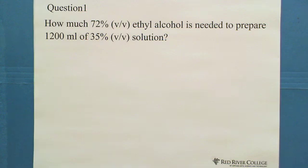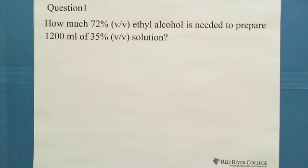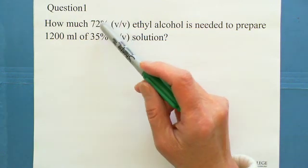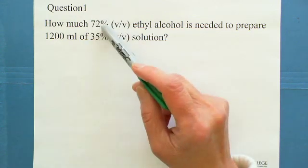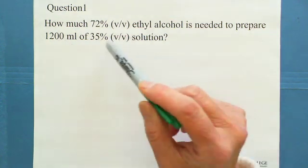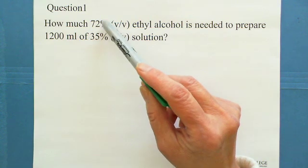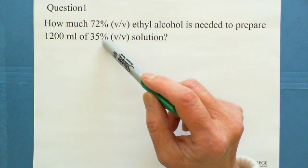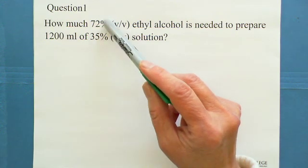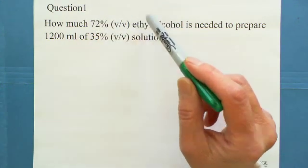How much 72% volume percent ethyl alcohol is needed to prepare 1200 milliliters of 35% solution? From 72%, we have this kind of solution, but we want to make 1200 milliliters solution with concentration at 35%. To make lower concentration, we need to add water into high concentration solution. But how much high concentration ethyl alcohol is needed?